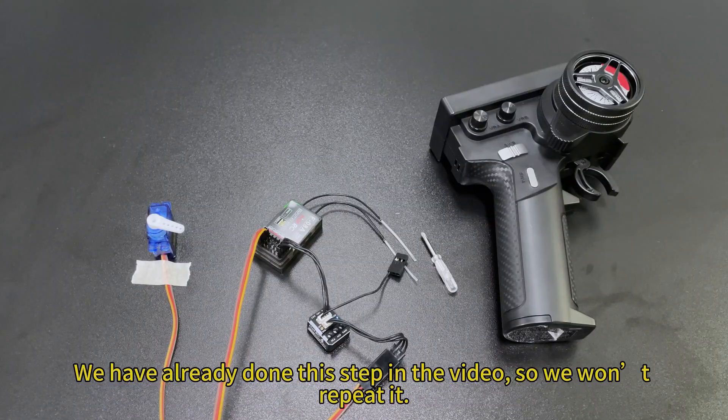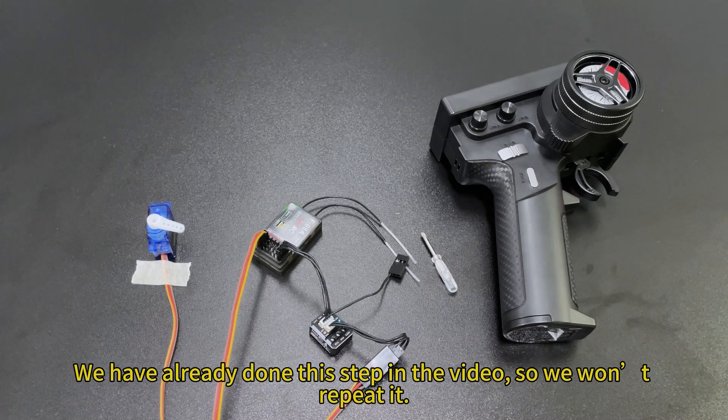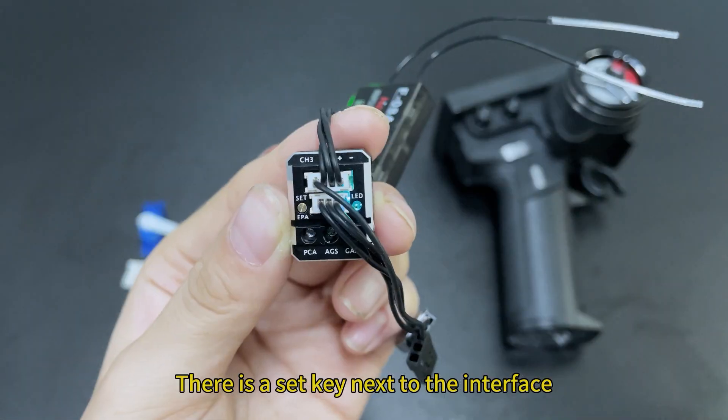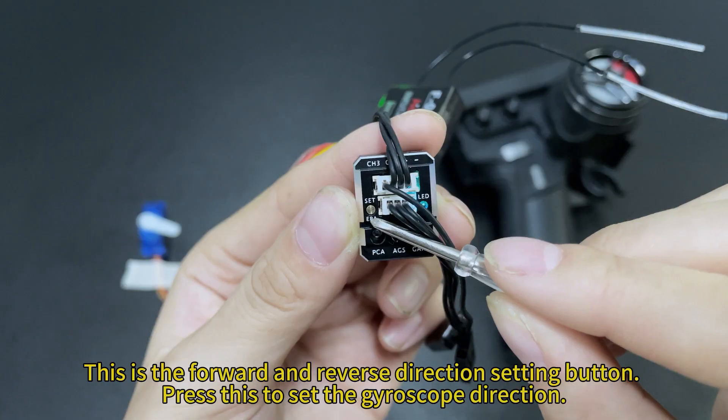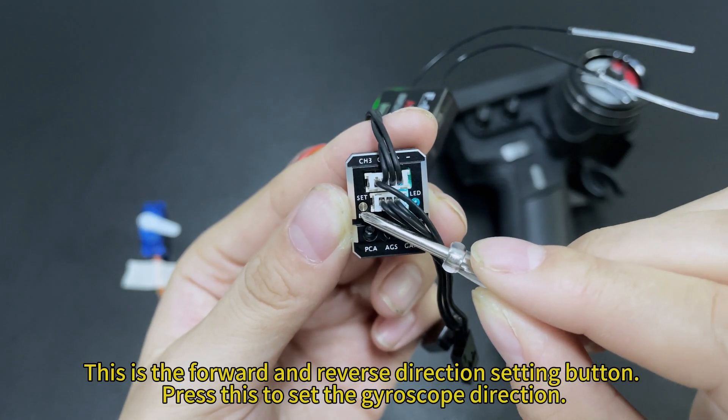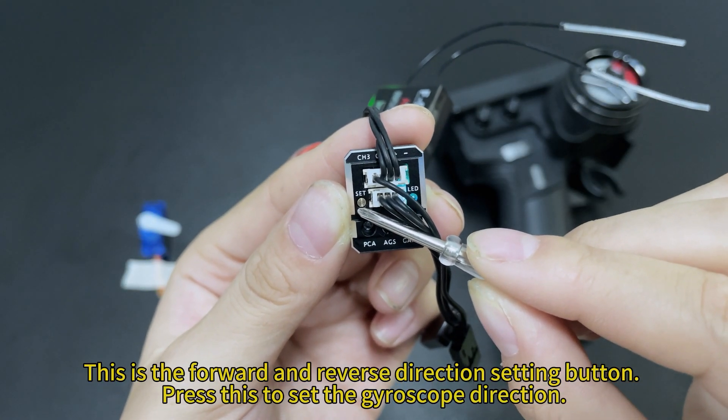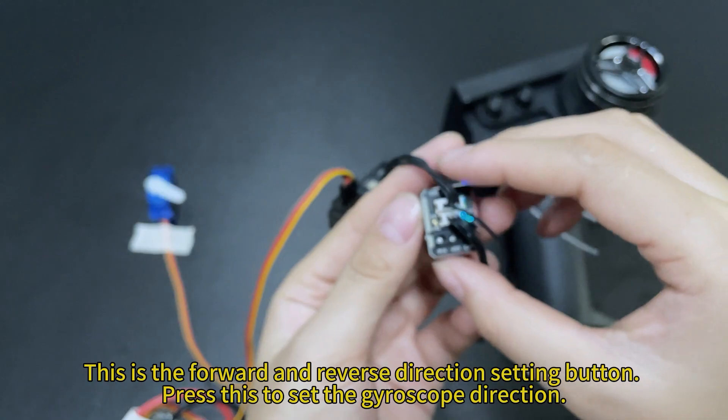We have already done this step in the video, so we want to repeat it. There is a set key next to the interface. This is the forward and reverse direction setting button. Press this to set the gyroscope direction.